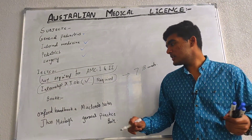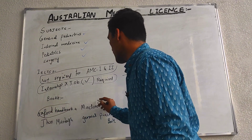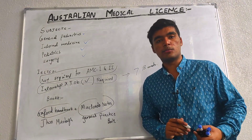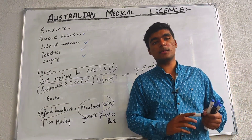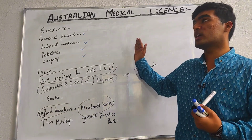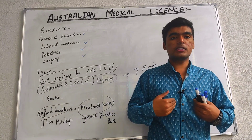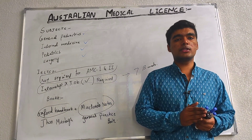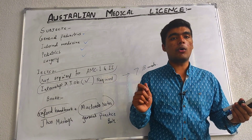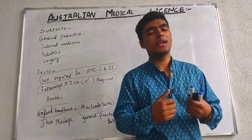For preparation, the recommended books are the Oxford Handbook, Macleod's Notes, and John Murtagh's General Practice book. This concludes the basic video on how to get a medical license and registration in Australia. Hoping you all get benefit from this, and praying that you all get your license and have a bright future. Please subscribe to Medicos Lectures by Shujat. Thank you so much.